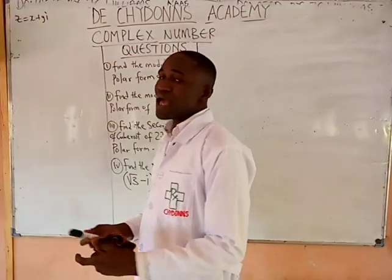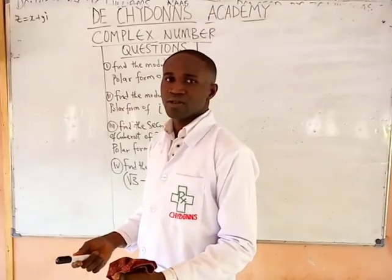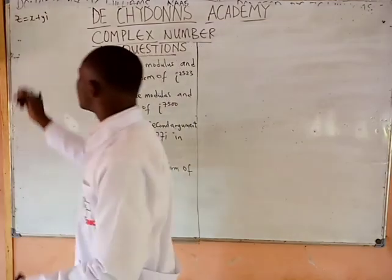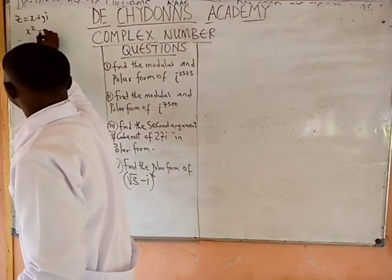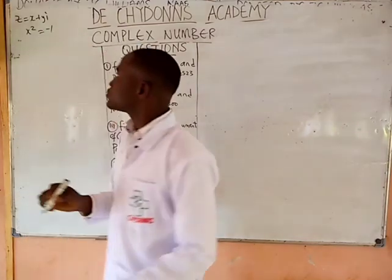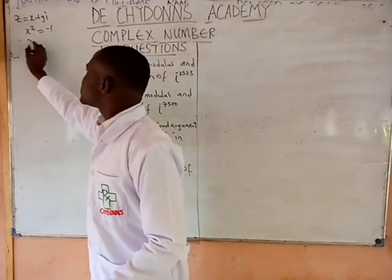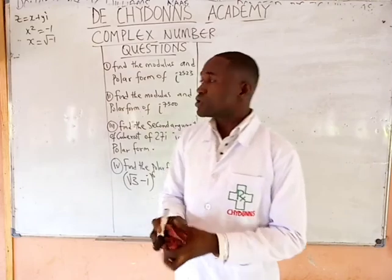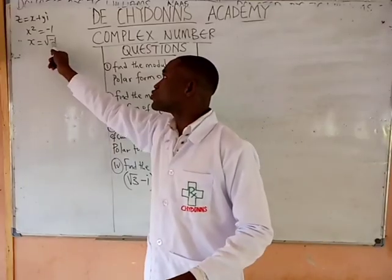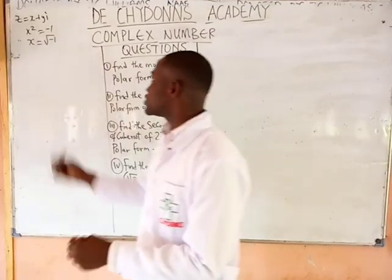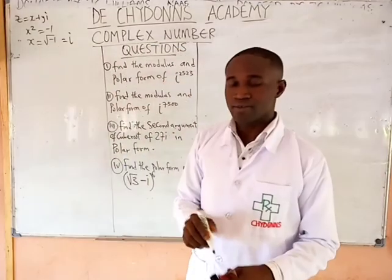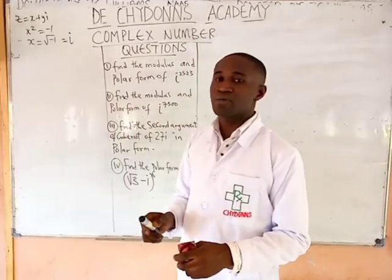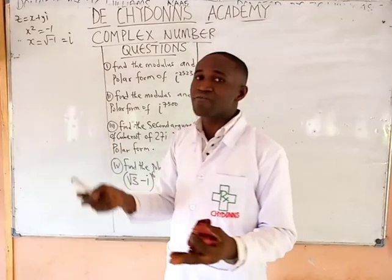This imaginary number — you may ask, what does it mean? Does it mean that numbers can be imaginary? When you have x squared equal to minus 1, x automatically equals the square root of minus 1. If you press square root of minus 1 in your calculator, you will see that it gives you an imaginary number. It means that this number is imaginary — we don't have it as a real number.